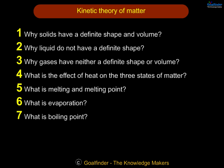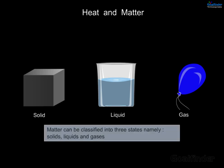In this lesson, we will explore the kinetic theory of matter: why solids have a definite shape and volume, why liquids do not have a definite shape, why gases have neither a definite shape nor volume, and the effect of heat on the three states of matter — including melting, melting point, evaporation, and boiling. Matter can be classified into three states: solids, liquids, and gases.